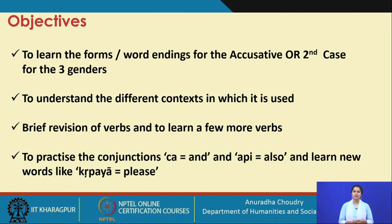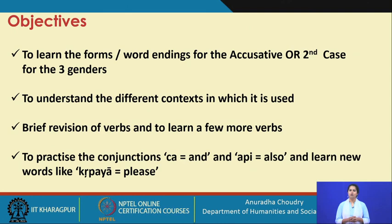We will do a brief revision of the verbs that we have seen, because you have been introduced to a few more verbs in our previous sessions. And then to learn a few more verbs so that you have a bigger vocabulary. And finally, it will be to practice the conjunctions we had briefly looked at, like cha, which means 'and', and also api, which means 'also', and to learn new words like krippaya meaning please, and avashyam, etc.